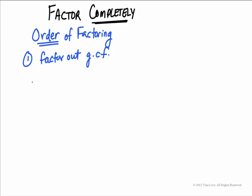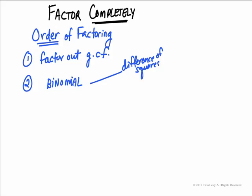If you can't factor out the greatest common factor, then you go to the second step, and this one has different pieces to it. After you've factored out the greatest common factor, or if you couldn't and you're left with a binomial — which means two terms — you're going to have three possibilities for that. One possibility is difference of squares, and that looks like something squared minus something squared. Notice that there would be two terms; that's what I meant by binomial.